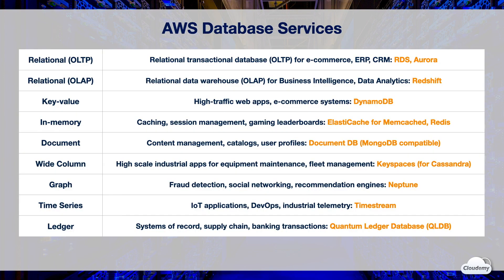AWS offers several purpose-built database technologies. Relational databases for OLTP applications such as Amazon RDS and Aurora are designed for e-commerce, ERP, CRM, and web applications. Amazon Redshift is the relational OLAP data warehouse designed for business intelligence and data analytics. Amazon DynamoDB is AWS's proprietary key-value store designed for high-traffic web apps and e-commerce systems. Amazon ElastiCache, the in-memory data store for Memcached and Redis, is designed for session management, gaming leaderboards, and simple caching. Amazon DocumentDB is a MongoDB-compatible NoSQL database to store semi-structured data such as JSON-like documents — ideal for content management, catalogs, and user profiles.